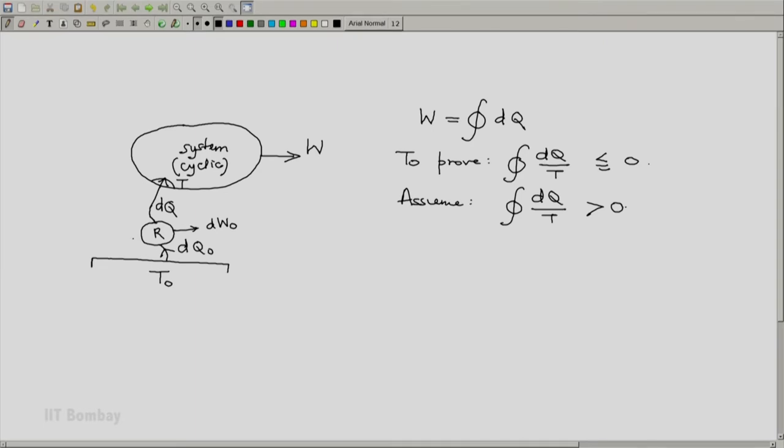Now remember that this is a reversible 2T machine. So we have dW0 is dQ0 minus dQ by first law. Then algebra write this as dQ into (dQ0 by dQ minus 1). And which, because this pertains to a reversible machine, this will be dQ into the temperature at which heat is applied to this reversible machine. That is T0 divided by the other temperature T minus 1.